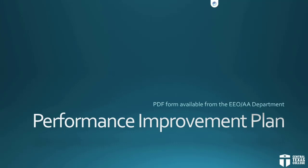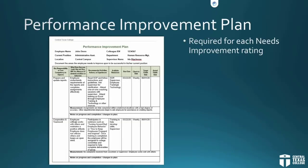Let's take a look at the performance improvement plan. These forms are available from Jackie Thomas in the EEO office. A PIP is required for each 'needs improvement' rating — that doesn't mean you need a new piece of paper for each one. Each row on the form is a separate plan, so the form can actually show two needs improvement areas at once.